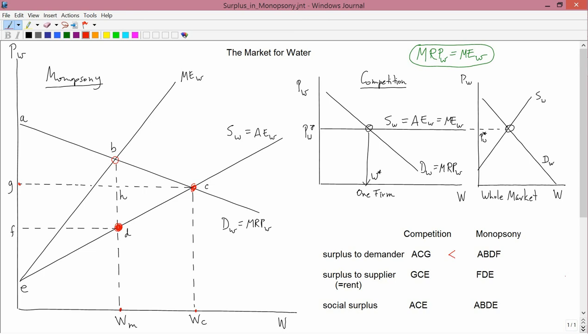At the next line, the surplus to the supplier. Under competition, it's GCE. And under monopsony, it's FDE. GCE is definitely bigger. So the monopsonist certainly functions to squeeze the people that supply him with the thing he's buying.